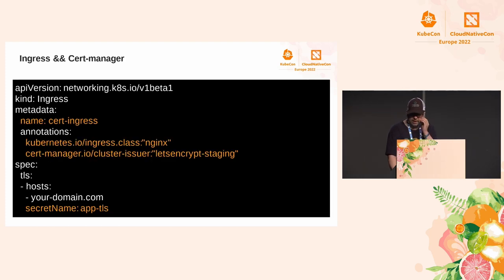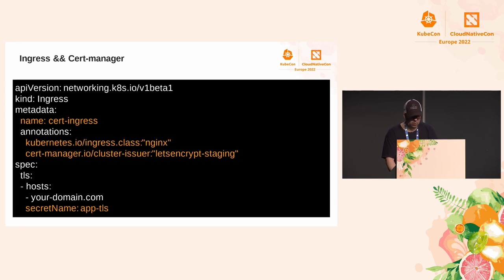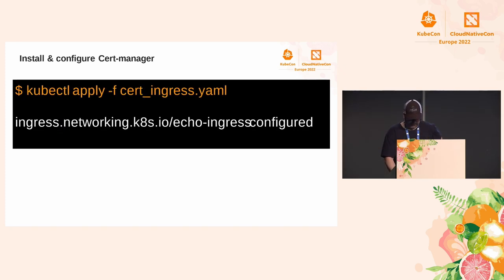Now that we have created our Let's Encrypt test issuer, we are ready to modify the ingress resource and enable TLS encryption. In this example we define the ingress controller and specify the ClusterIssuer as letsencrypt-staging. In the last section of the file we add a TLS block to specify the domain for which we want to acquire certificates, and we specify a secret name that will contain the TLS private key and the issued certificate.